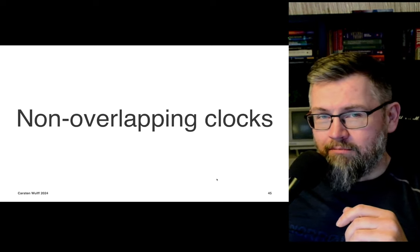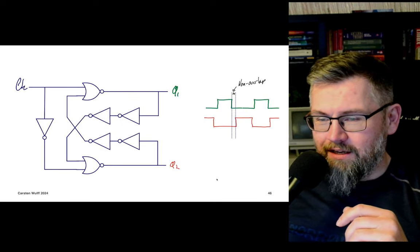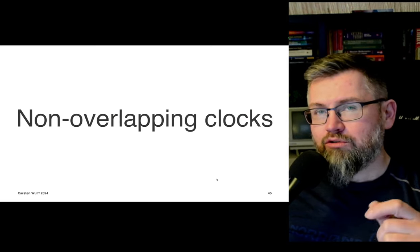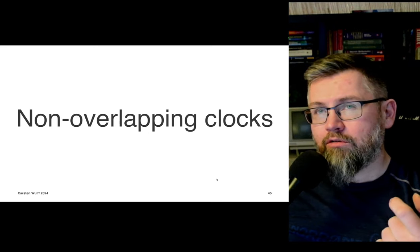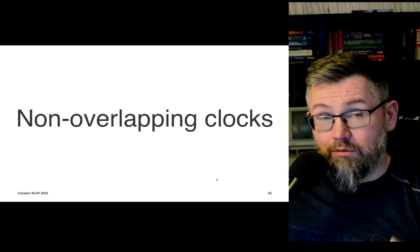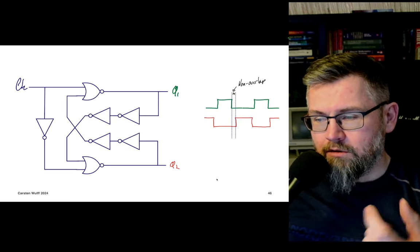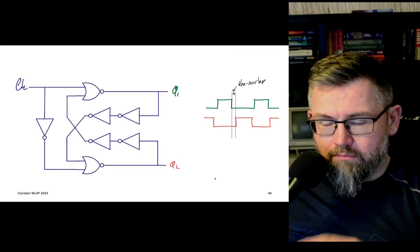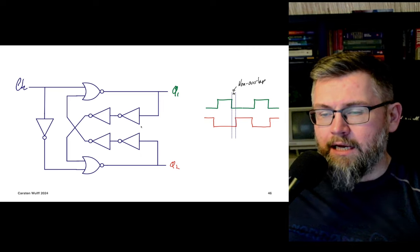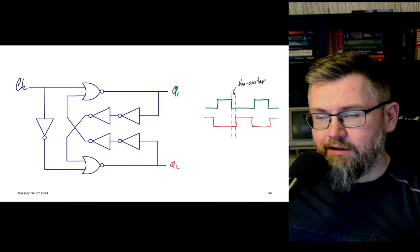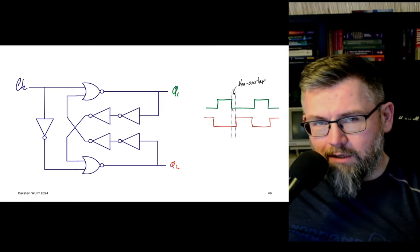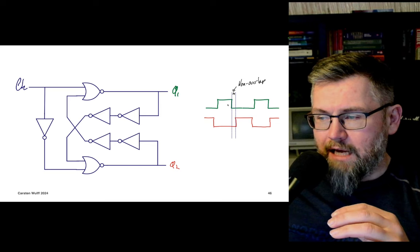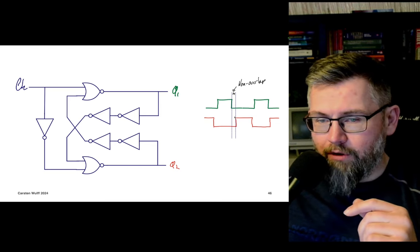We need to generate a non-overlap. What you're looking at is one example of a non-overlapping clock generator: it generates PHI1 and PHI2, and you can adjust the non-overlap by changing the delay in the feedback loop using simple digital logic gates. You must simulate this and ensure that across all corners — slow, fast, varying temperatures — you always have a non-overlap as shown.